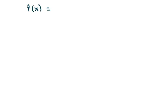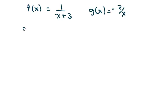The next one — all of these are very similar. We have f of x equals 1 over x plus 3, and g of x equals negative 2 over x. The first thing you do is find the domain of g, the inner function. That's going to be x, but x cannot be 0 — you can't divide by 0.